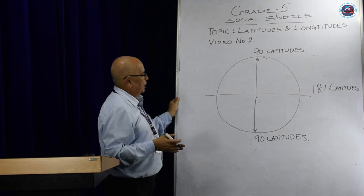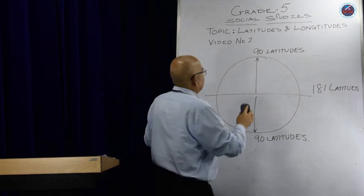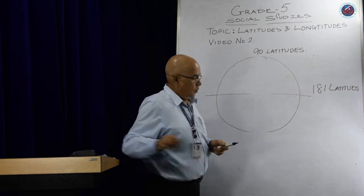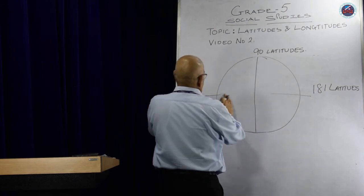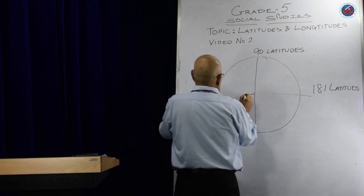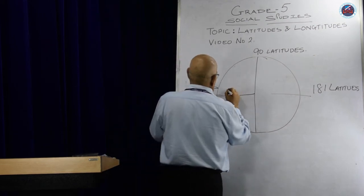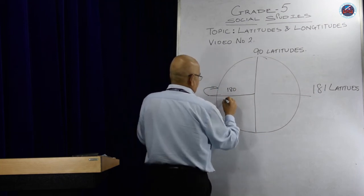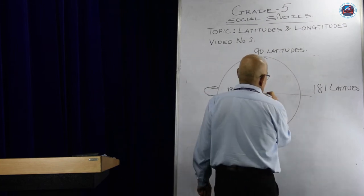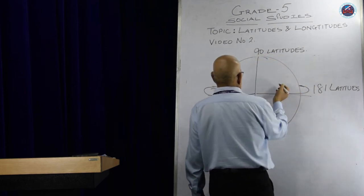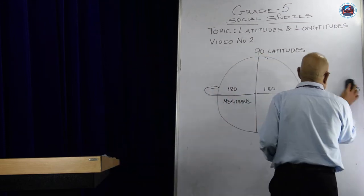Similarly, talking about the meridians or longitudes — from the prime meridian right down to the international date line we have around 180 meridians. And the same way from the prime meridian around to the international date line on the other side, we have another 180 meridians, making it a total of 360 meridians.